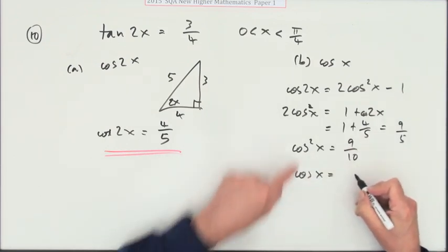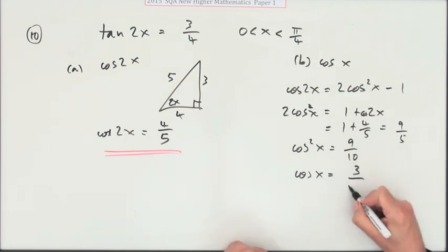Now take the square root and you're almost there. Well, the square root of 9 is nice, that's 3, but the square root of 10 you're kind of stuck with. So that's √10.